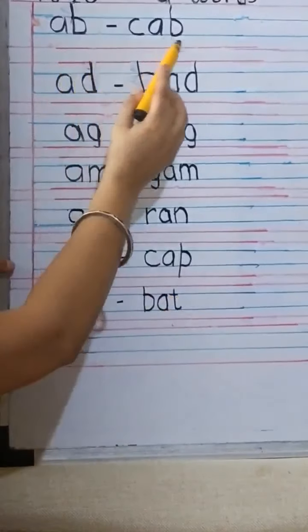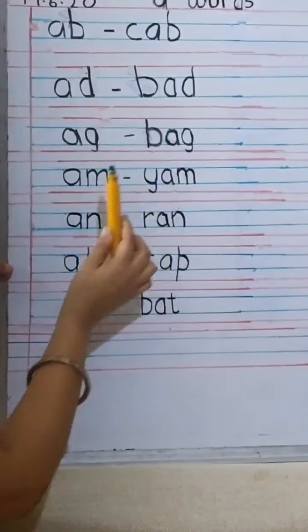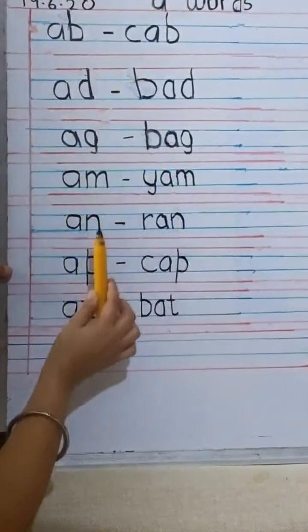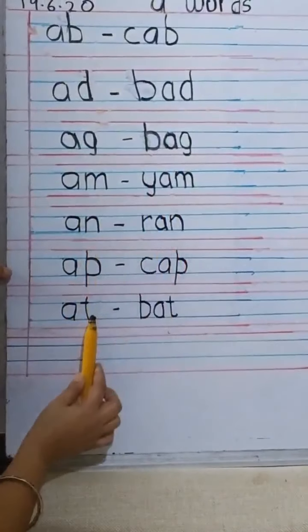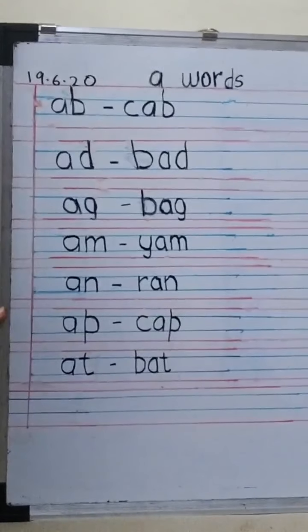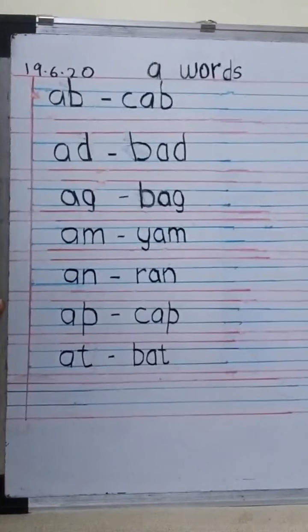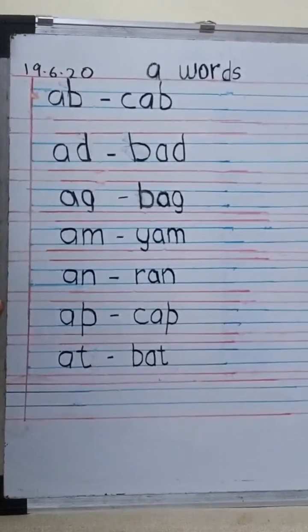So now we have written AB, CAB. AD, BAD. AG, BAG. AM, YAM. AN, RAN. AP, CAP. AT, BAT. So now we are going to write a sentence. So there are two rules in a sentence. Then it begins with a capital letter and ends with a full stop.